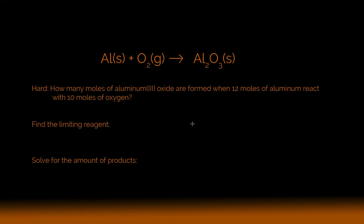Lastly, we go to the third level of difficulty — a pretty tough stoichiometry question. We're asking how many moles of aluminum oxide are formed when 12 moles of aluminum react with 10 moles of oxygen. I left this reaction unbalanced to show that the first step for any stoichiometry problem is to double-check that your reaction is balanced. So I rewrite the coefficients: 4, 3, 2. You cannot run a stoichiometry problem until the reaction is balanced.